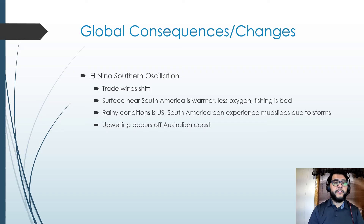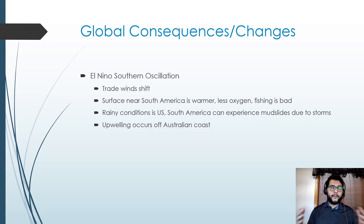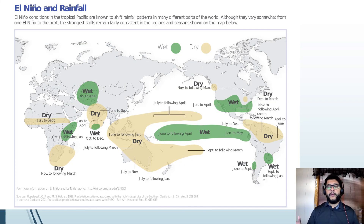El Niño Southern Oscillation (ENSO) happens when the trade winds shift and the surface water near South America becomes warmer with less oxygen, causing fishing to drop — this has economic consequences. Rainy conditions develop in South America and the US, mudslides increase in South America, and upwelling shifts to the Australian coast, affecting fishery migration. It's important to distinguish both environmental and economic consequences for the AP exam.